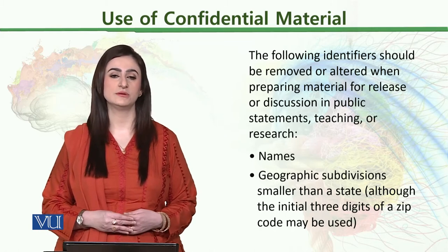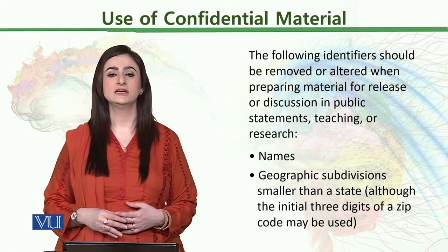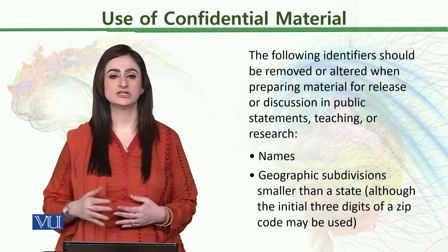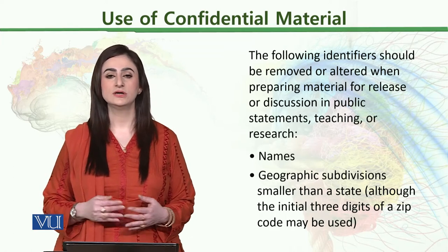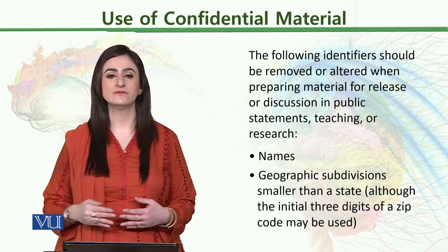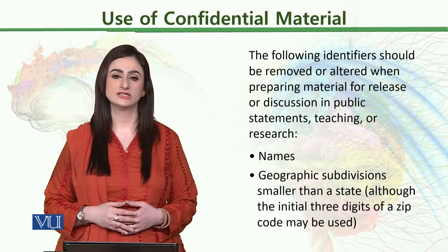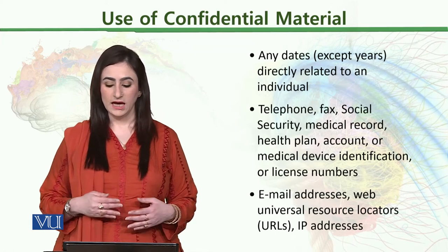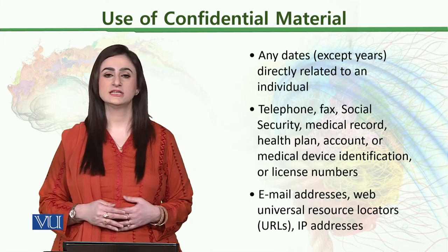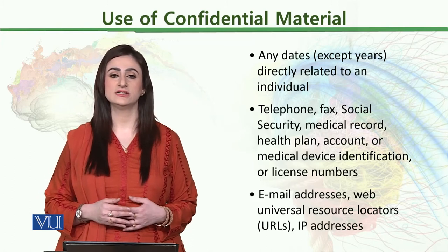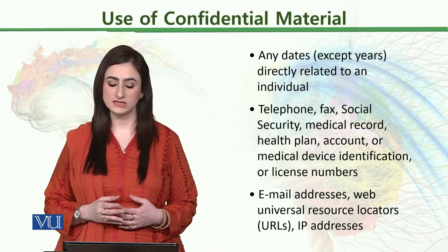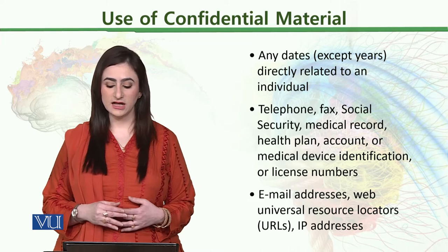Geographic data can be distributed and differentiated — for example, northern Punjab or southern Punjab — to indicate from which geographical region the data is being presented. Any dates except years can be an identifier, so specific dates are not mentioned — such as a person's date of birth or when their illness manifestation began, as these things are directly related to the individual.